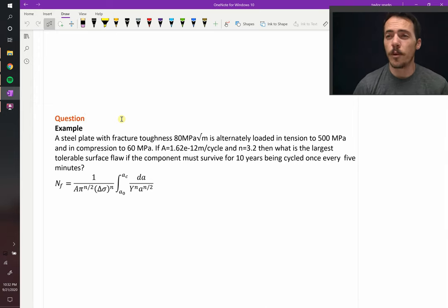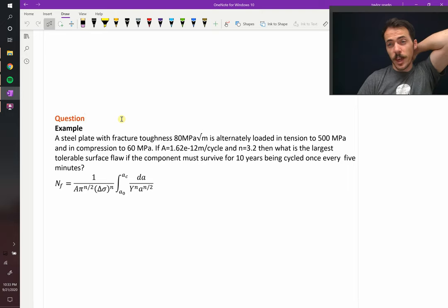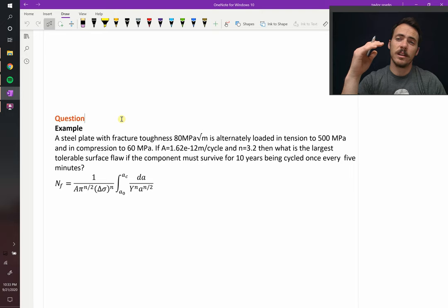Let's do an example of using crack growth rates to estimate the number of cycles until failure. It says the following: a steel plate with a fracture toughness of 80 MPa root meters is alternately loaded in tension to 500 MPa and compression to 60 MPa. If A and N are given, what is the largest tolerable surface flaw if this component must survive 10 years being cycled once every five minutes?